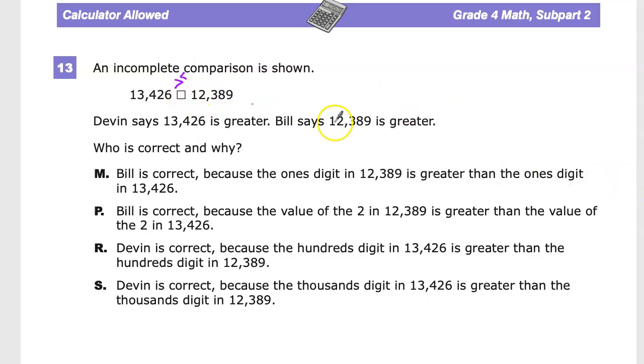But Devin says that 13,426 is greater, and Bill says the other one, which I don't think I said, is 12,389 is greater. Who is correct and why?